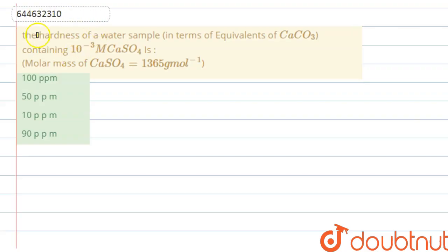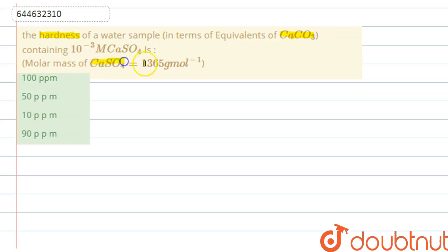In this question, it is given that the hardness of a water sample containing 10 to the power minus 3 molarity of CaSO₄ is to be found. We have to find its hardness in terms of equivalent of calcium carbonate. The molar mass of calcium sulphate is 136 gram per mol. There are four options: 100 ppm, 50 ppm, 10 ppm, and 90 ppm.